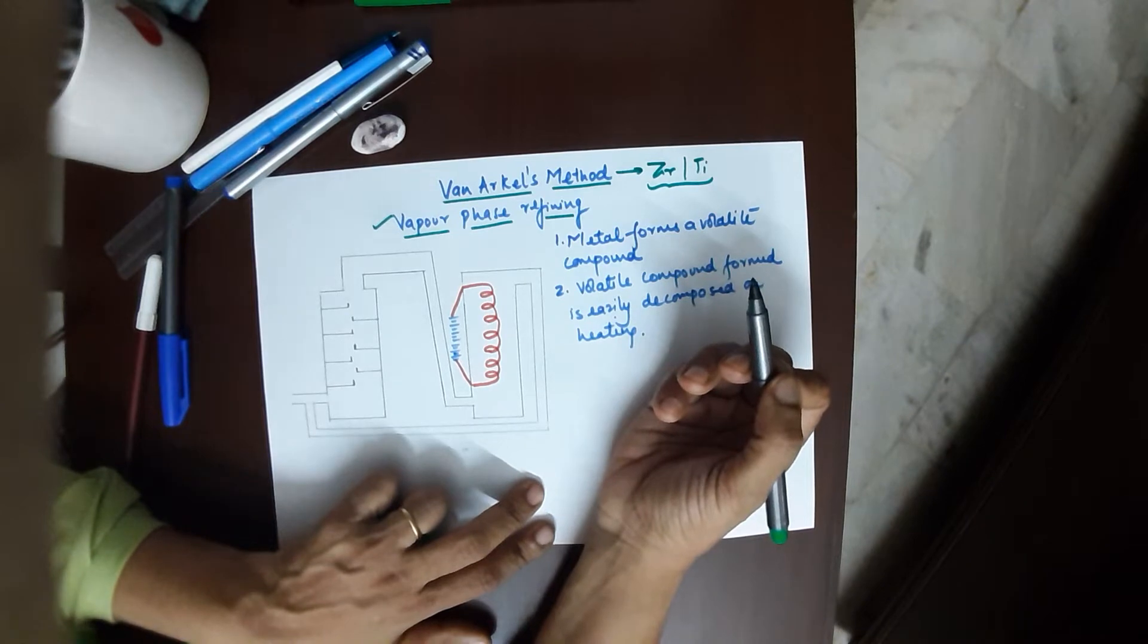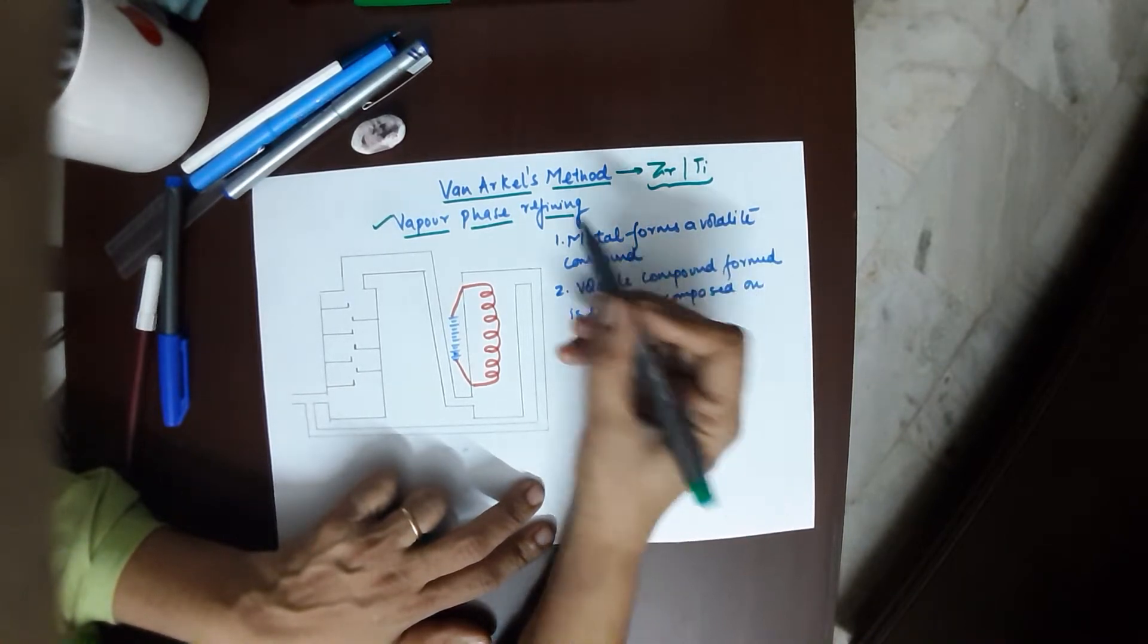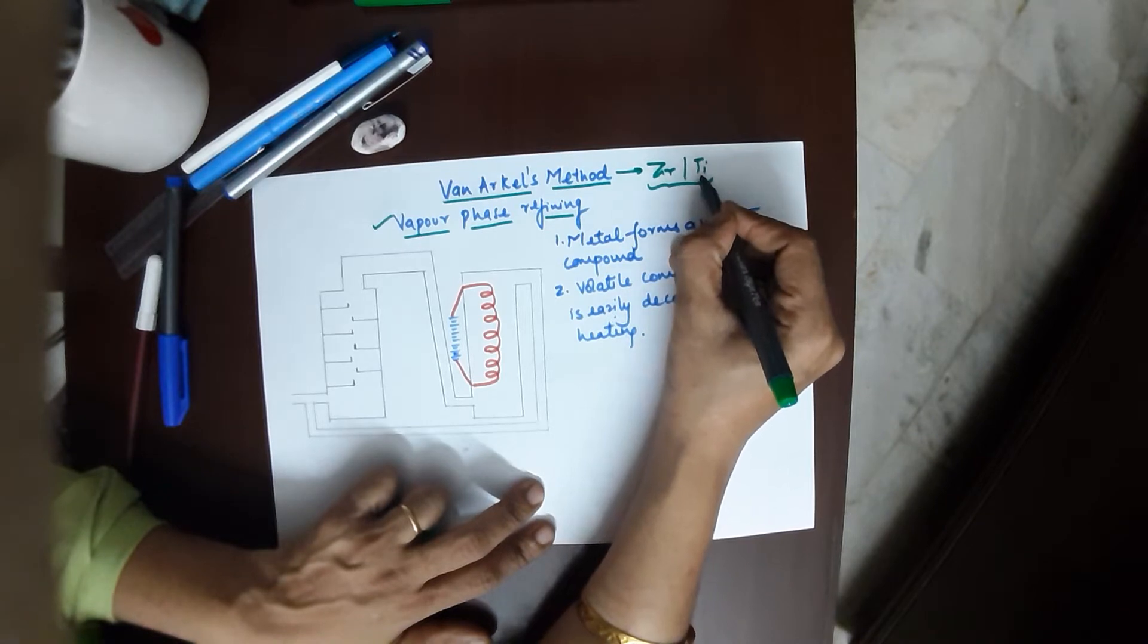We have also done the topic of refining of nickel via Mond's process. You can have a look at that video if you are doing the chapter of general principles of extraction. Moving to Van Arkel's method, this is only for zirconium and titanium.